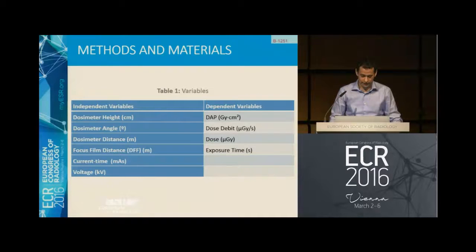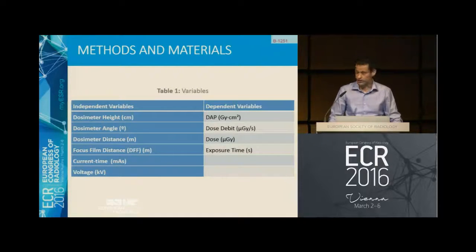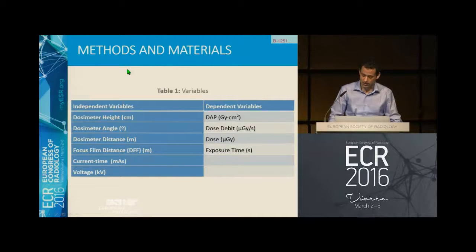These are our variables. We have the dosimeter height, taking into account the bed, the dosimeter angle, the distance, focus-film distance, the current-time product, and the voltage as our independent variables. We also have the depth, the dose, and exposure time.